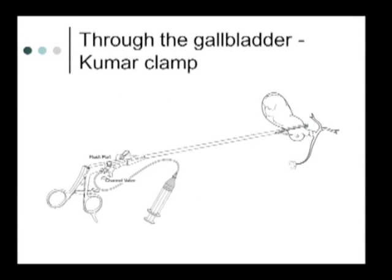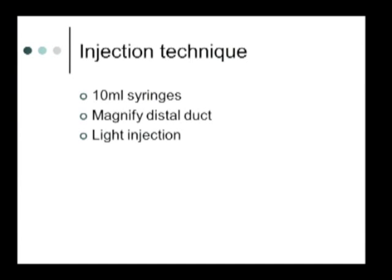The other option is to go through the gallbladder to do your cholangiography. The Kumar clamp has become quite popular for this — it's placed across the infundibulum, and an offset needle comes through the shaft into the infundibulum, then you inject through the gallbladder and into the cystic duct and common duct. You can imagine limitations: if there's obstruction at the cystic duct-infundibulum junction, this might not be successful. But at my institution, many colleagues prefer this approach.